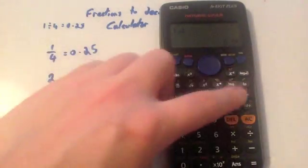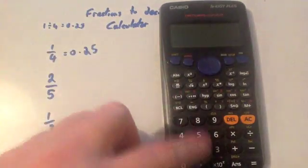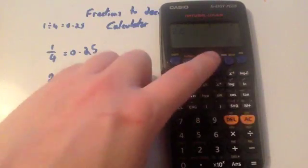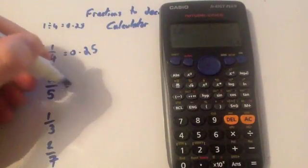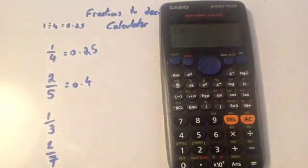So let's do two fifths. Again, you could just do it in math mode or in line mode, whatever. Two, fraction button five, press equals. Two fifths, press the SD button, 0.4. So the answer is 0.4. Remember you could also do two divided by five in your calculator, that would give you the same answer.